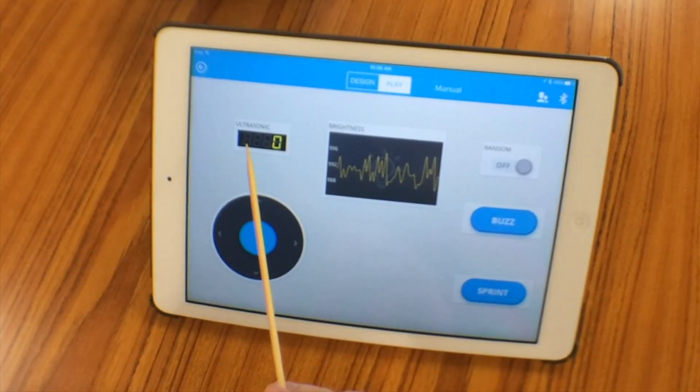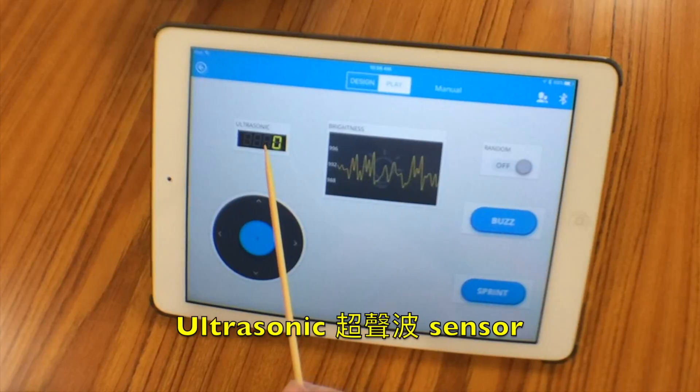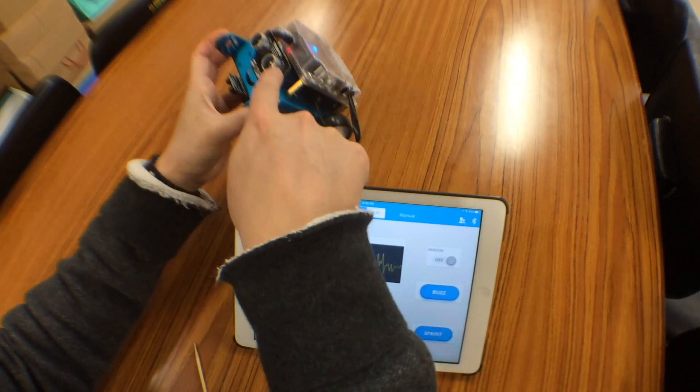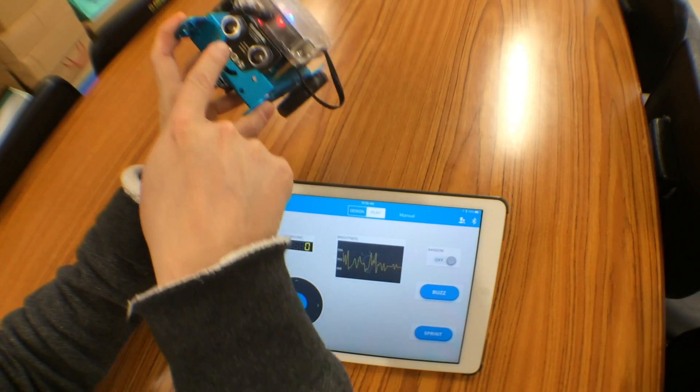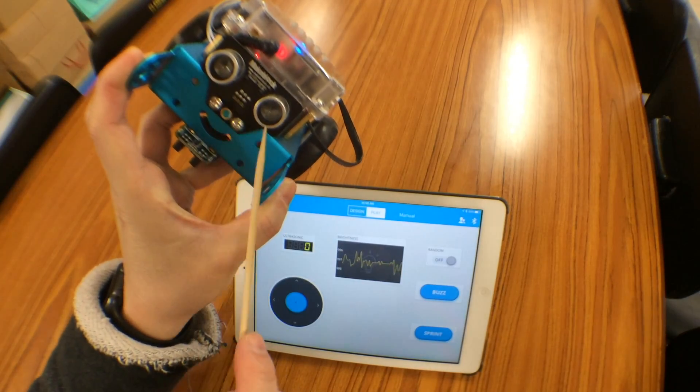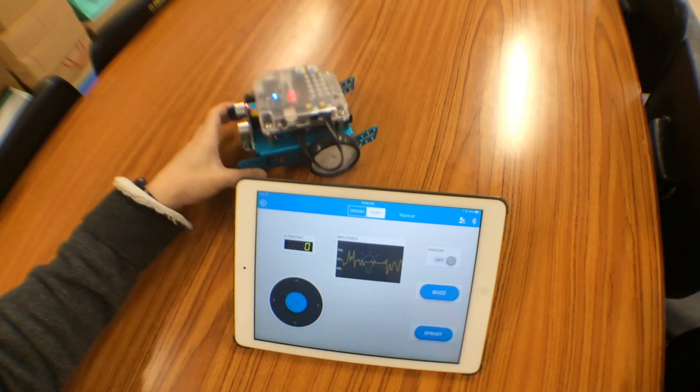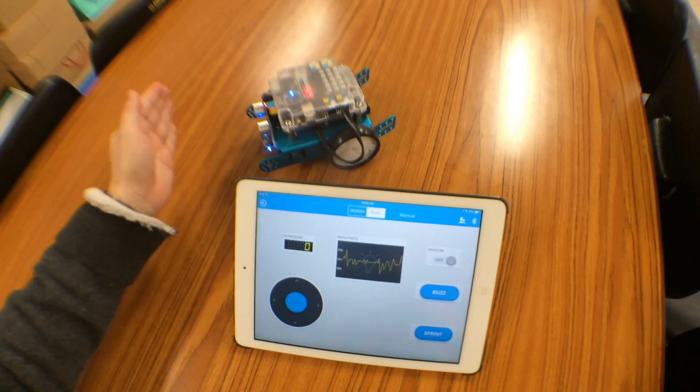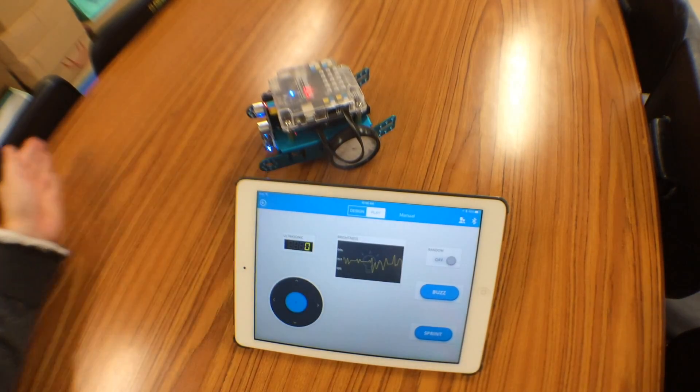And we also have an ultrasonic sensor on the front of the AirBot robot. This is the ultrasonic sensor. It can detect some obstacles in front of the AirBot.